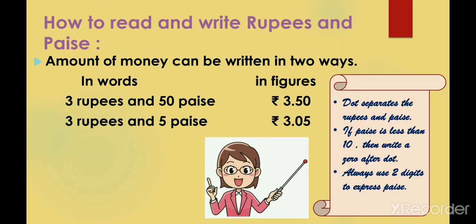Let's see how to read and write figures in rupees and paise. Amount of money can be written in two ways. In words, it can be written like 3 rupees and 50 paise. And in figures it is written as rupees 3.50. The dot separates the rupees and the paise. Next example: 3 rupees and 5 paise can be written as rupees 3.05.